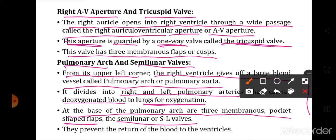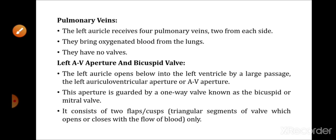Valves allow blood to move in one direction only — they do not allow two-way movement. Blood from the ventricles enters the pulmonary arch, but cannot go back to the ventricles because the semilunar valve prevents backflow. The right side of the heart supplies blood to the lungs, and therefore is called the pulmonary heart.